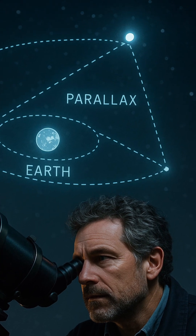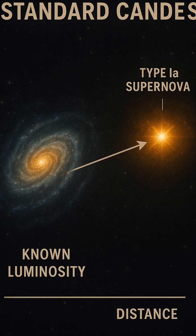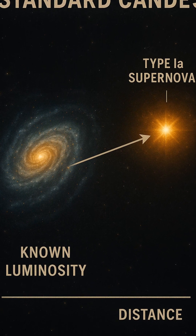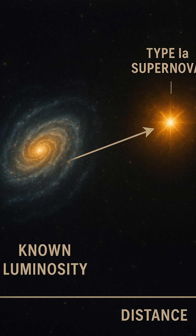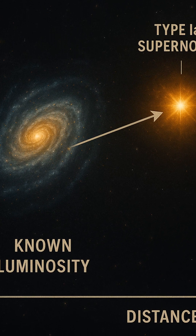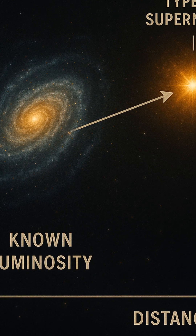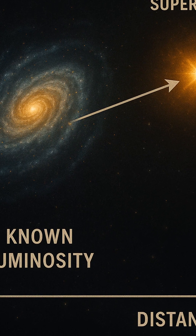The cosmic distance ladder is the reason we know the universe is 13.8 billion years old, that galaxies are receding, and that dark energy exists. It's the ruler of the cosmos, refined over centuries, one step at a time.